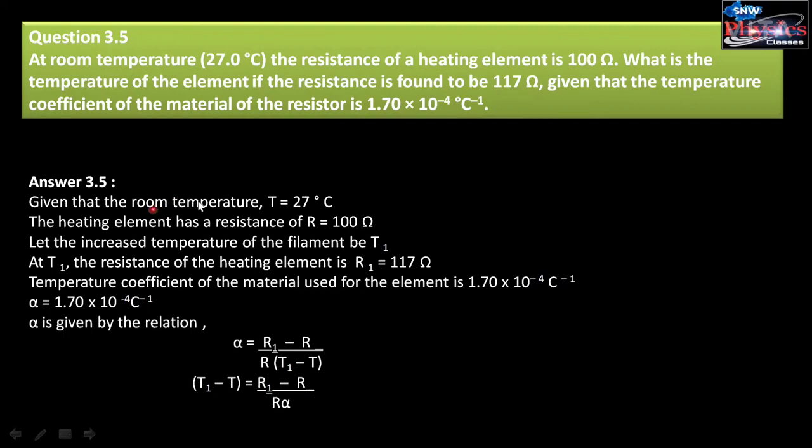Let's see the solution. Given that at room temperature, temperature is 27 degrees Celsius, the heating element resistance is 100 Ohm. Let the increased temperature of filament be T1 and the resistance of the heating element is 117 Ohm.